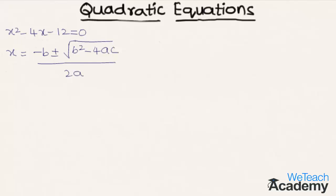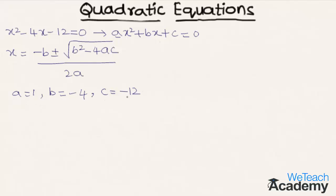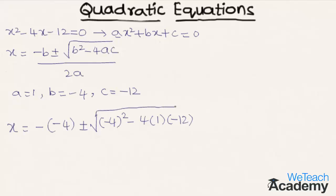Comparing the equation with ax² + bx + c = 0, we get a = 1, b = −4, and c = −12. Substituting into the formula: x = (−(−4) ± √((−4)² − 4 × 1 × (−12))) / (2 × 1).